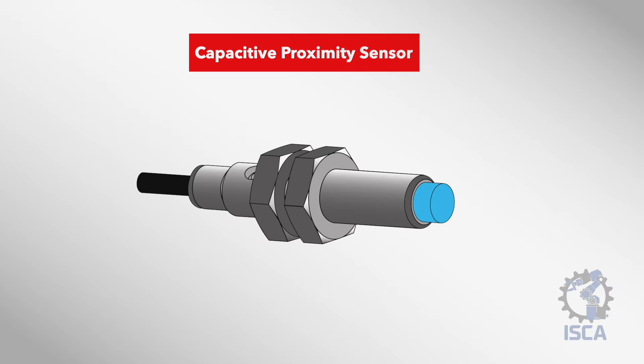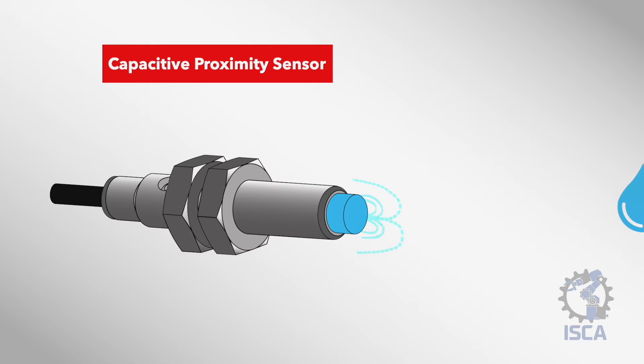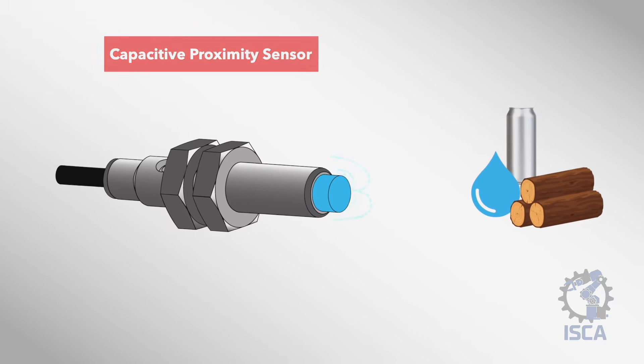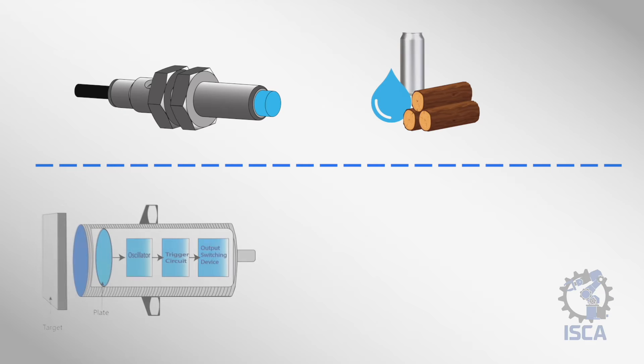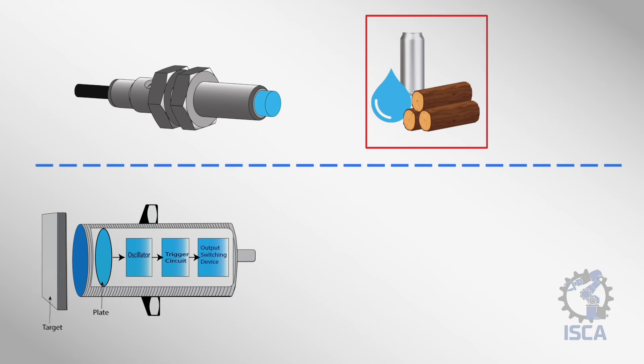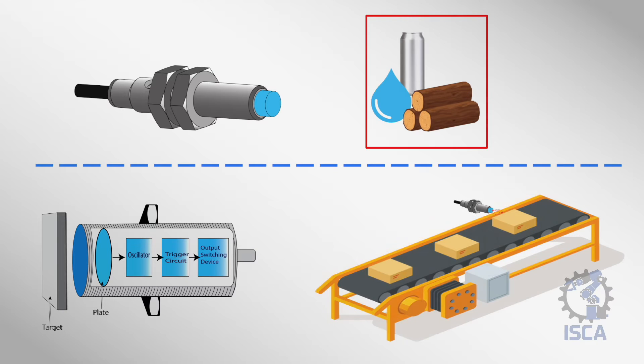Capacitive proximity sensors are incredibly versatile devices that can detect the presence of various objects without requiring any physical contact. In this overview, we'll dive into the key details about how these sensors work, the components involved, the wide range of materials they can detect, and some common real-world applications where they provide value.